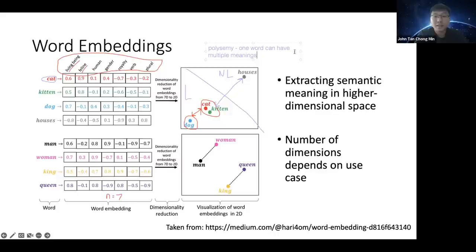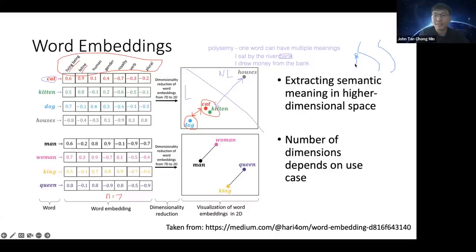Polysemy is a very big and difficult issue that has plagued NLP for a while. For example, the word 'bank': 'I sat by the riverbank' versus 'I drew money from the bank.' One bank means the side of a river; the other is a financial institution. The same word has entirely different meanings — it can even be a noun or a verb. There are so many different ways to interpret a single word.